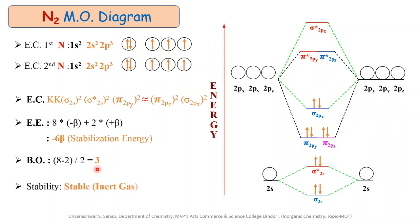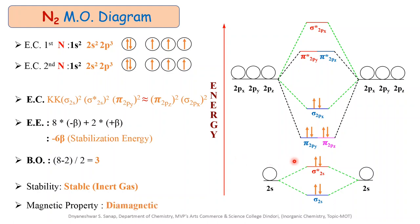The next point is stability. Because of the maximum energy evolved during the formation of N2 and its bond order of 3, the molecule is stable and exists in the gaseous state. Due to the triple bond order, the N2 molecule is inert in nature, which is why it is called an inert gas. Regarding the magnetic property, there are no unpaired electrons in the N2 molecule, and therefore N2 is diamagnetic in nature. Thank you for watching.